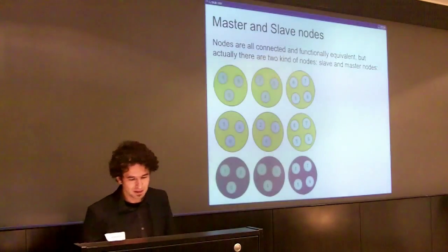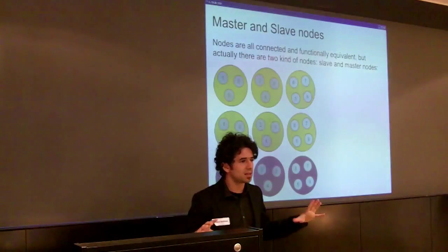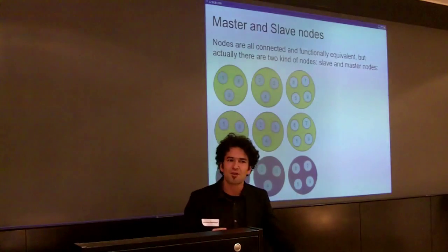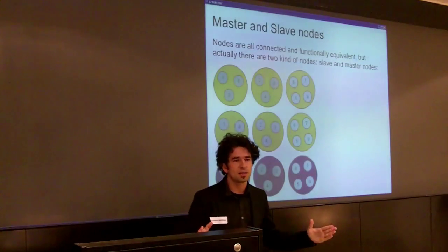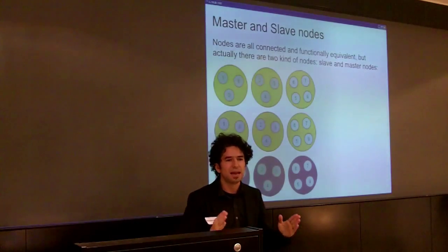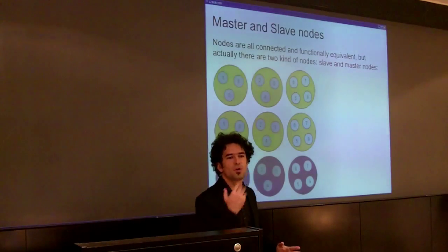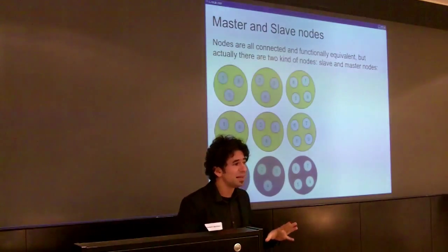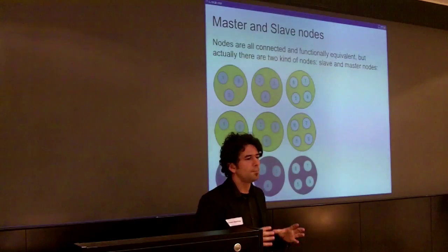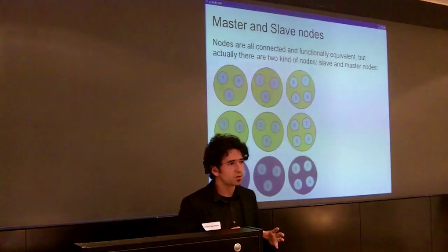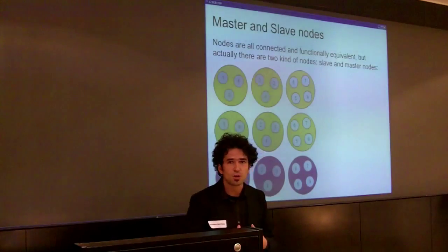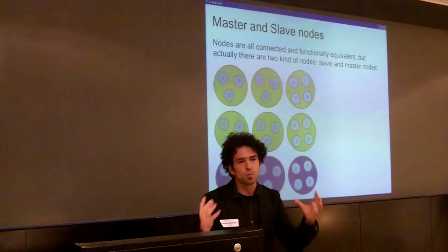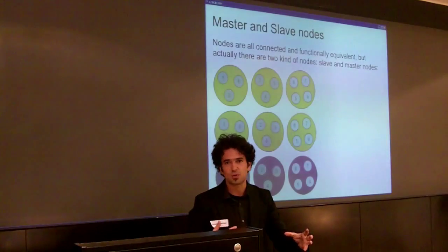All nodes are connected together — every node has a TCP connection to every other node. So if there are 10 nodes, every node will have 9 outgoing connections. Not all nodes are the same, though, because there is a kind of node that is a master node and a kind of node that is a slave node. A slave can promote to master if the master starts to have problems.